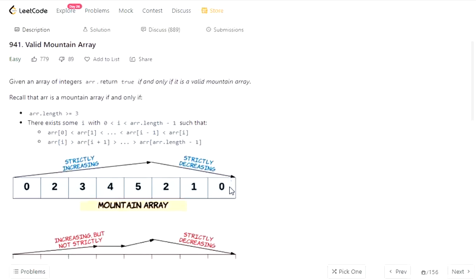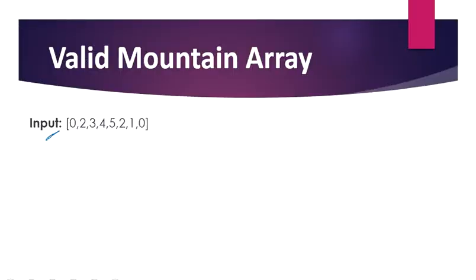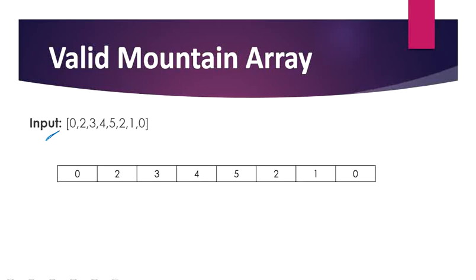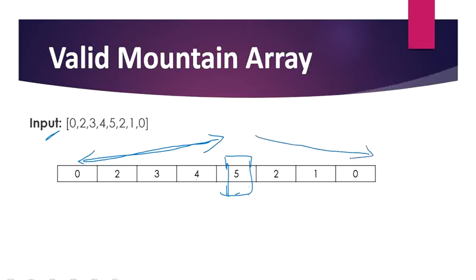Here is our input array to understand the problem. If you see, our i is at the value 5. The values before 5 — that is 0, 2, 3, 4 — are strictly increasing. After 5, the values 2, 1, 0 are decreasing. So this is a valid mountain array.